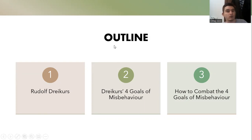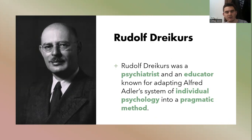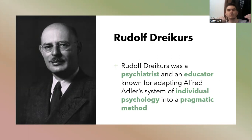So let's start with Rudolf Dreikurs himself. Rudolf Dreikurs was a psychiatrist and an educator known for adapting Alfred Adler's system of individual psychology into a pragmatic method. Alfred Adler was a psychotherapist and the founder of individual psychology. So what Rudolf Dreikurs did was he adapted Adler's system of individual psychology into a pragmatic method.